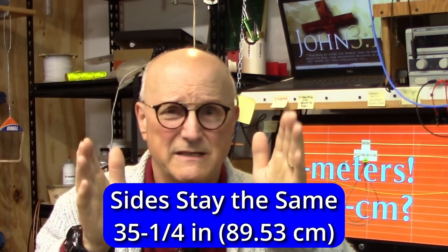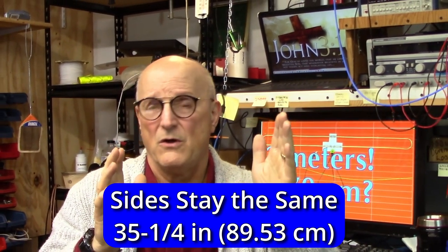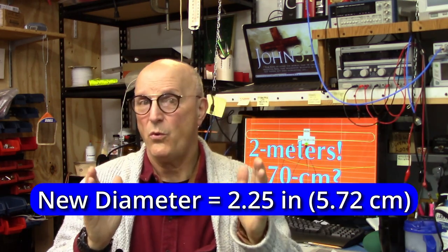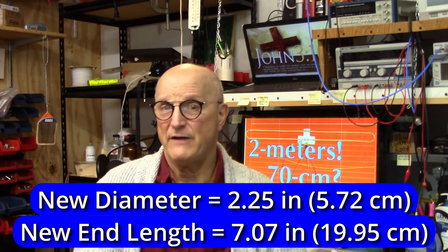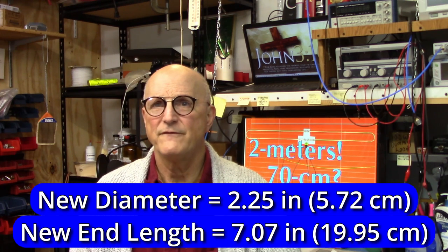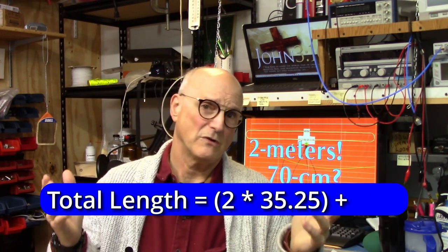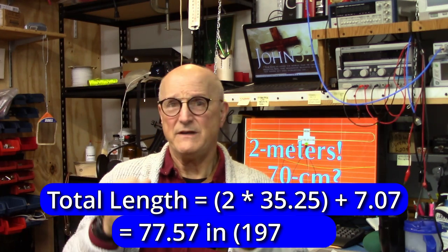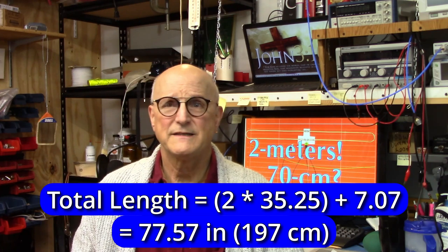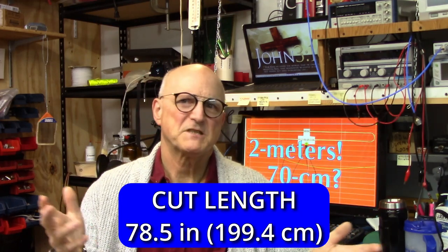So how long do I cut my tubing? The side dimensions remain the same, that's still going to be 35.25 inches or 89.53 cm. What does change is the lengths necessary to run around the two ends. The new diameter is 2.25 inches or 5.72 cm. And with this we can quickly calculate the ends to be 7.07 inches or 19.95 cm. Which gives us a total length of 2 x 35.25 plus 7.07, a total of 77.57 inches or 197 cm. But like before, I'm going to cut it long, so I'm going to cut it to say 78.5 inches.